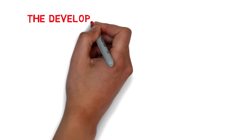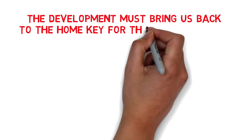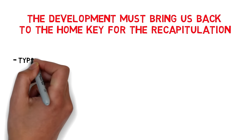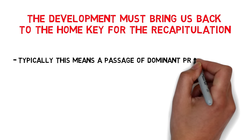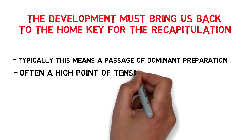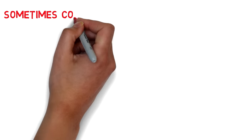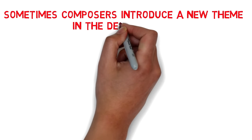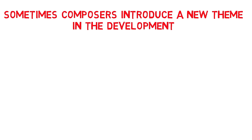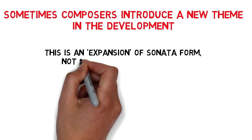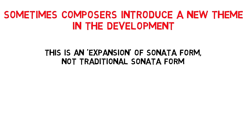Finally, of course, the development has to bring us back to the home tonic for the start of the recapitulation. So the development section will typically end with an amazing passage of dominant preparation. This moment can often be a high point of tension and climax in the piece, especially with later composers. Mozart uses this dominant preparation to shower us with classical thunder. In a few cases, like Beethoven's Eroica symphony, the composer might also introduce a new important theme in the development section. I consider this an expansion of sonata form rather than traditional sonata form, but it does add an extra dimension to the structure.